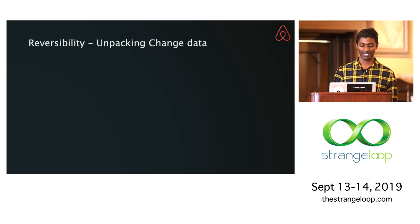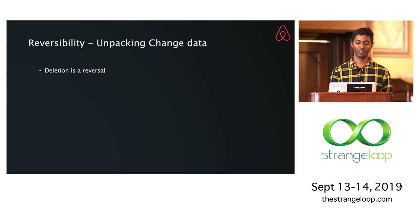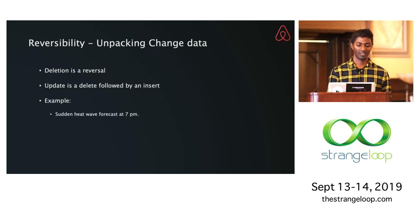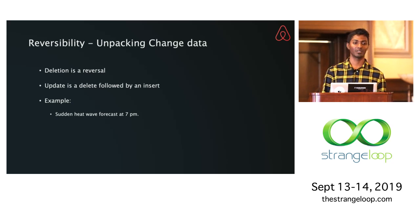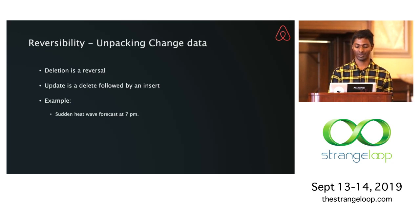There is another reason why reversibility matters: dealing with change data — data from database operations like inserts, deletes, and updates. Inserts are easier to deal with, but a deletion is a reversal. An update is nothing but a deletion followed by an insertion — deletion of the old value followed by an insertion of the new value. For example, if a heat wave forecast comes in at 7 PM, that changes the probability you'd choose Indian food. So you want to update an aggregate: reverse out the last forecast and update with the next one.